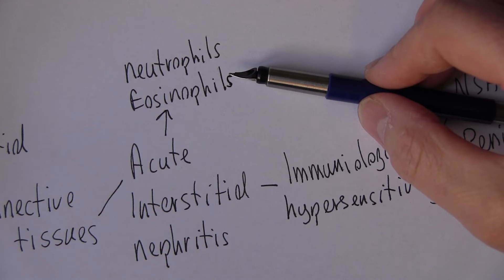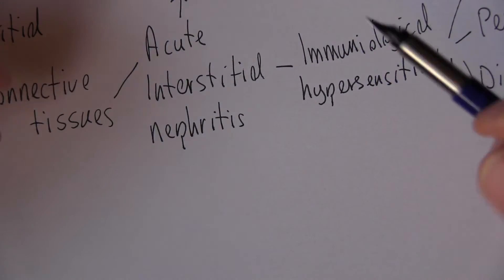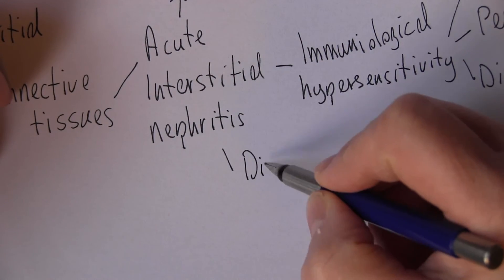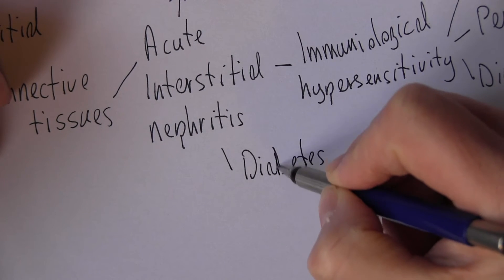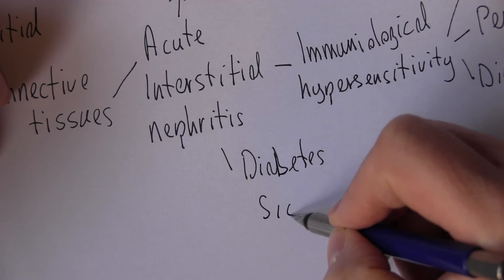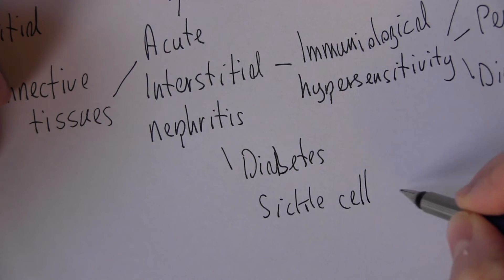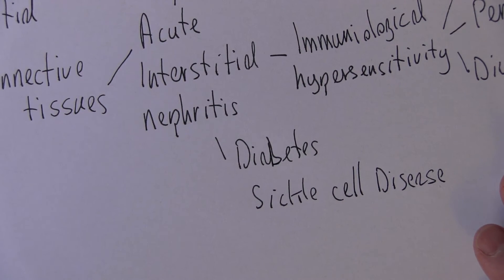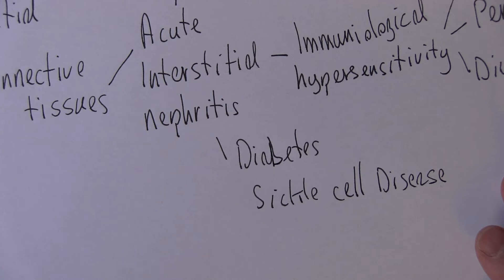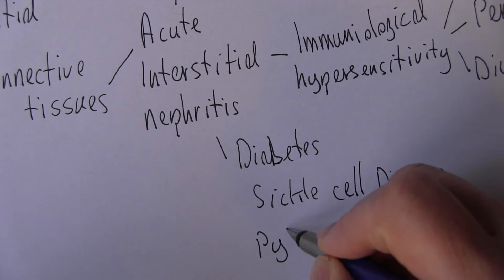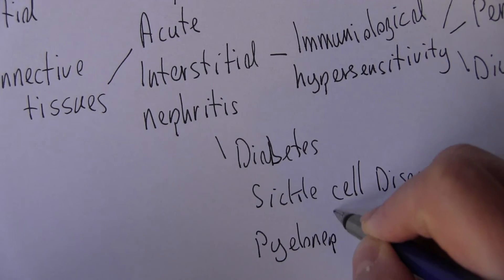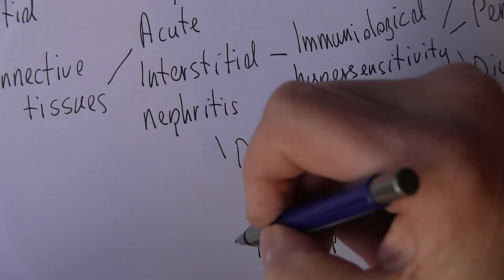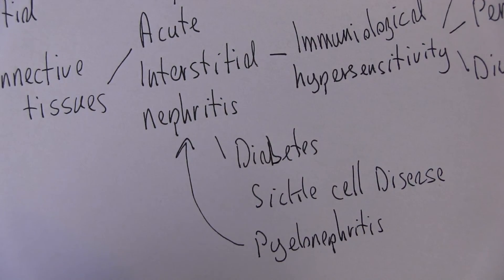What might be called friendly fire in military parlance. There are other things that can cause this nephritis as well. It's more likely to occur in diabetes mellitus, sickle cell disease — which is well known to cause sickle cell anaemia but can also cause other problems — and again pyelonephritis can contribute towards this acute interstitial nephritis.